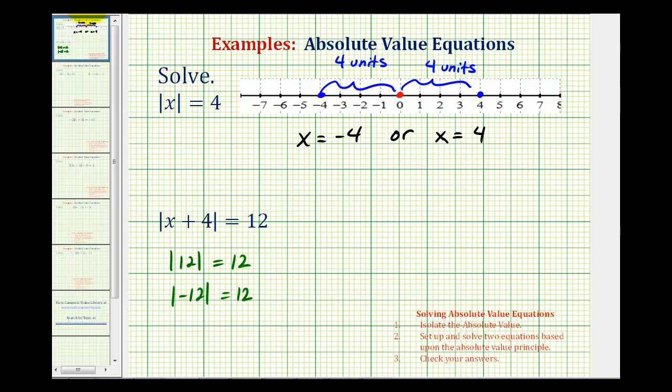So what we're going to do is take the expression inside the absolute value, x plus 4, set it equal to positive 12 for one equation and then set it equal to negative 12 for the second equation.